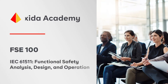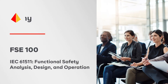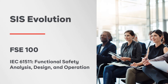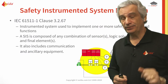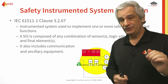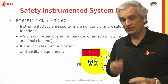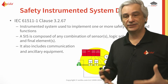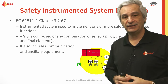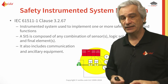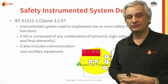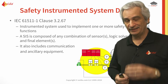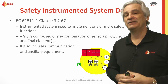IEC 61511 clause 3267 defines a SIS as an instrumented system used to implement one or more safety instrumented functions. This is very important because I can usually tell how well versed end users are in the standard — if they tell me it's a 'SIL2 system,' they really don't know.